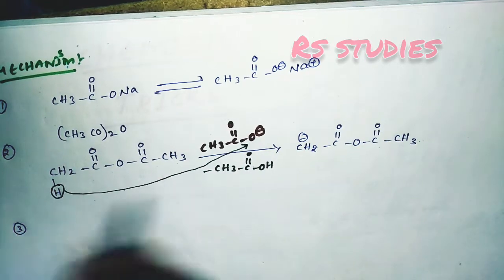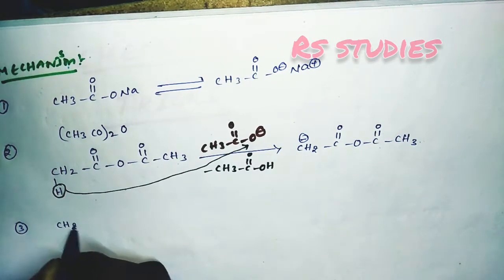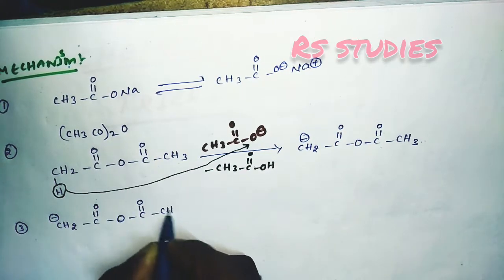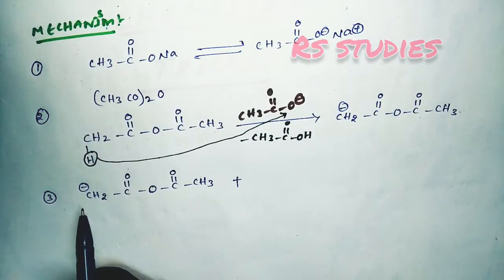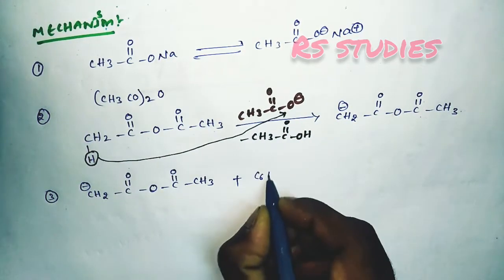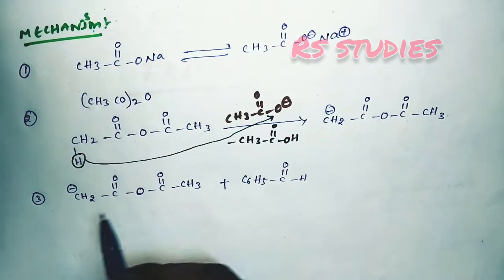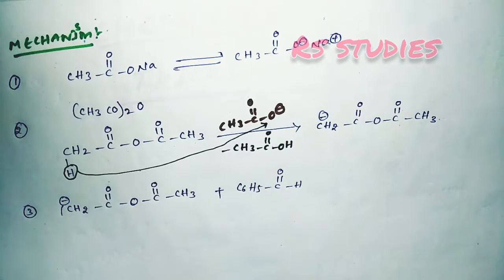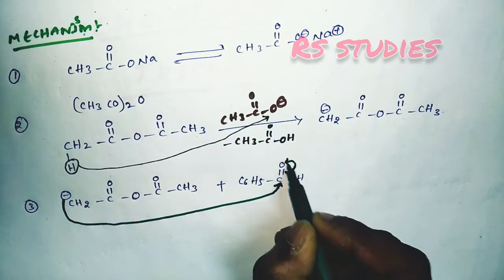In the next step, the carbanion CH2⁻-C(=O)-O-C(=O)-CH3 attacks. So the carbanion CH2⁻ plus benzaldehyde C6H5-C(=O)-H react together. The negative charge is attached to the benzaldehyde carbon.